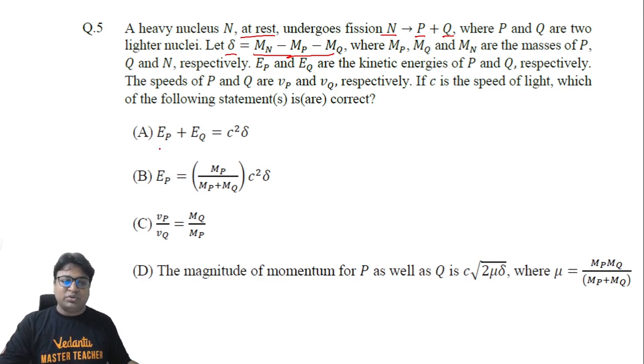EP and EQ represent the kinetic energy of P and Q. This option is correct—the kinetic energy of daughter products equals the Q value of the reaction, which equals mass defect times c². So this is correct.